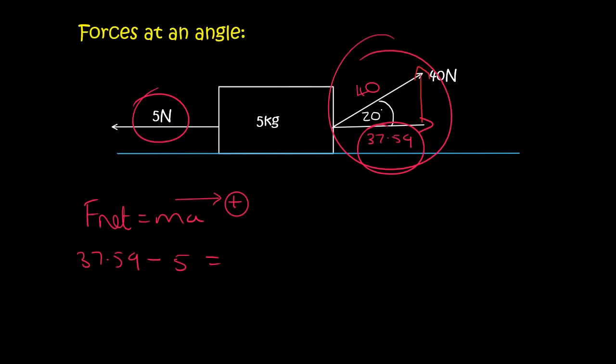And so F net is going to be 37.59 minus the 5 newtons because that's going in that direction and that's going to the right and that's your F net. That's equal to m which is 5 times by a.